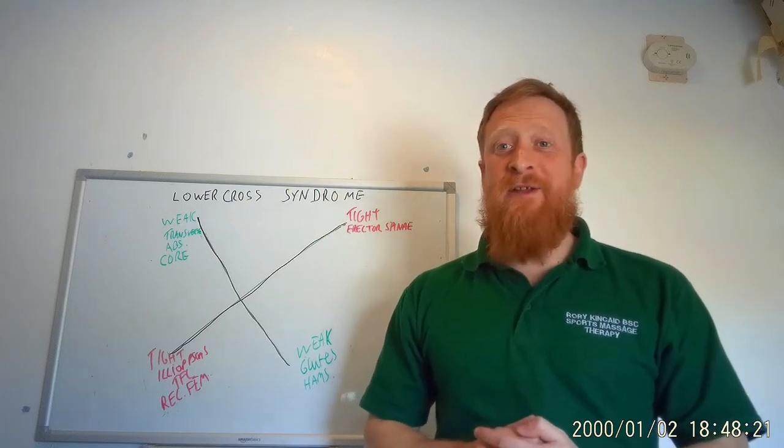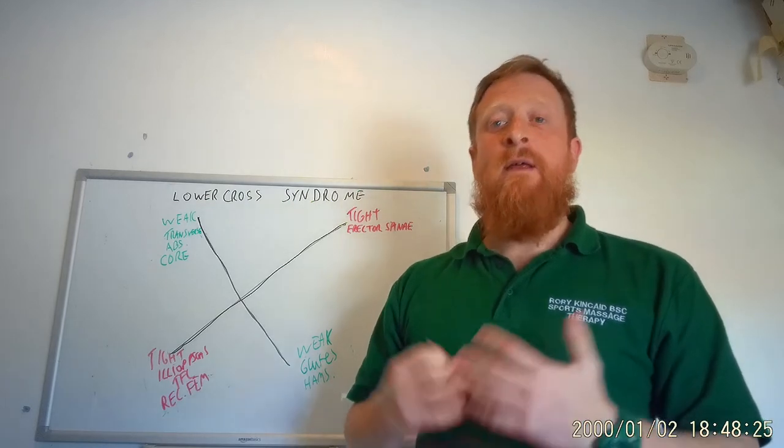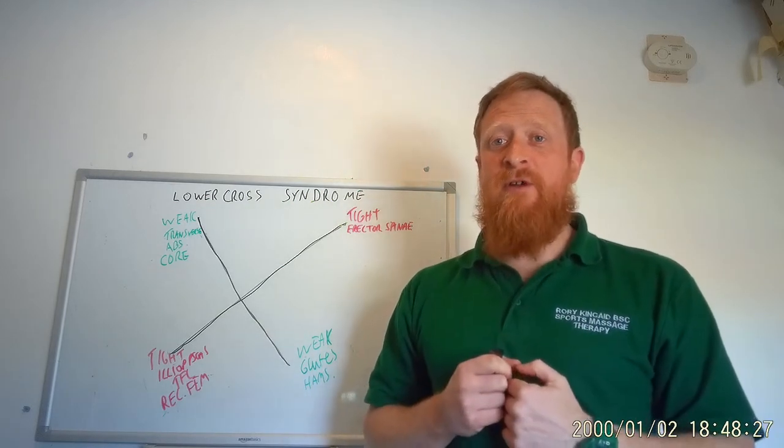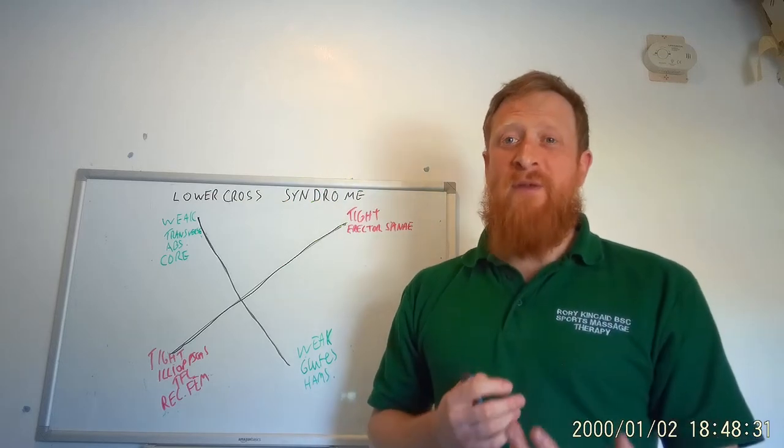Hello, so today we're going to be looking at the lower cross syndrome. Last presentation we looked at upper cross, the rounding of the shoulders and chin poke. Now we're going to look at the lower body equivalent.